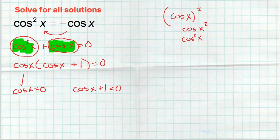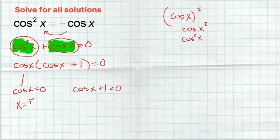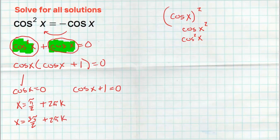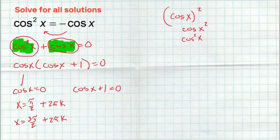This first one's easy — where is cosine of x equals zero? That happens at pi over two and three pi over two. Since they want all solutions, I can write pi over two plus pi·k to represent all answers, because adding a half circle each time covers three pi over two, then the next answer, and so on. k can also be negative, so you can go backwards. So pi over two plus pi·k covers the three pi over two as well.